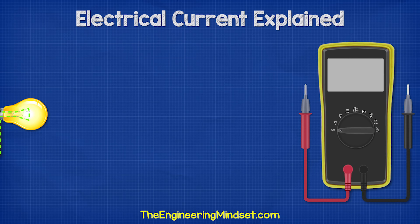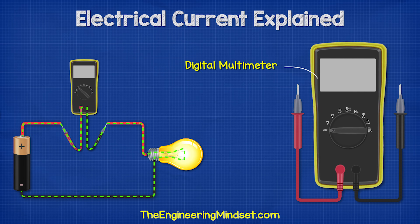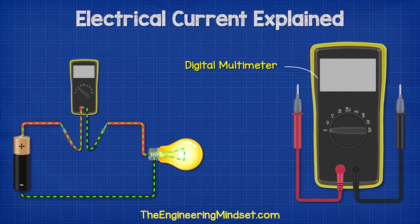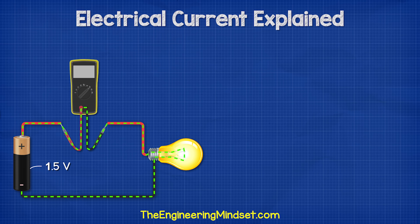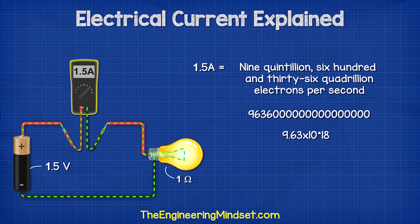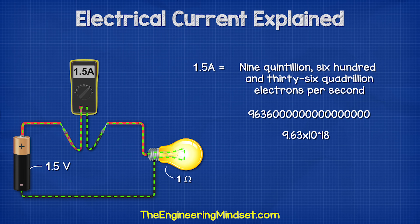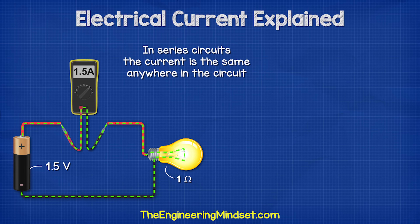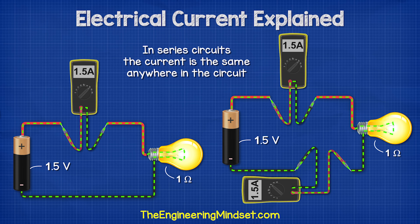Instead of using an ammeter, we're going to use a multimeter as we can do a lot more with this device. I'll leave some links in the video description down below for where you can pick up a good multimeter — I highly encourage you to get one of these for your toolkit, they're an essential tool for any electrical engineer. If we connect this 1.5 volt battery and this lamp, which has a resistance of 1 ohm, then we get a current reading of 1.5 amps, which means 9 quintillion 636 quadrillion electrons are flowing through the lamp every second. Because the components of this circuit are wired in series, the current is the same anywhere in the circuit, so we can take a measurement anywhere and it's the same value.